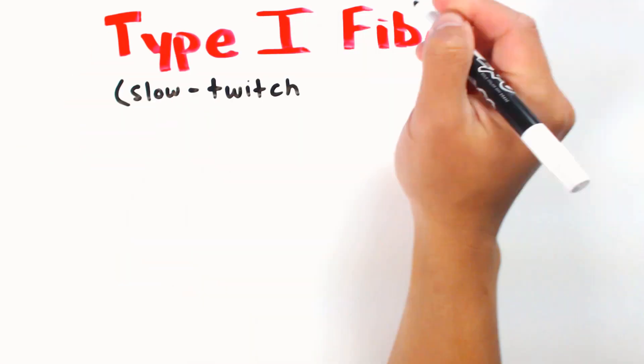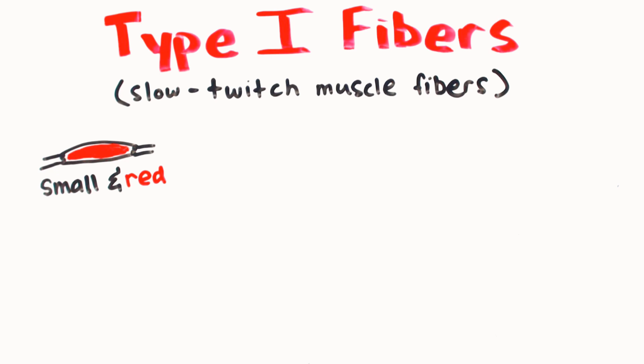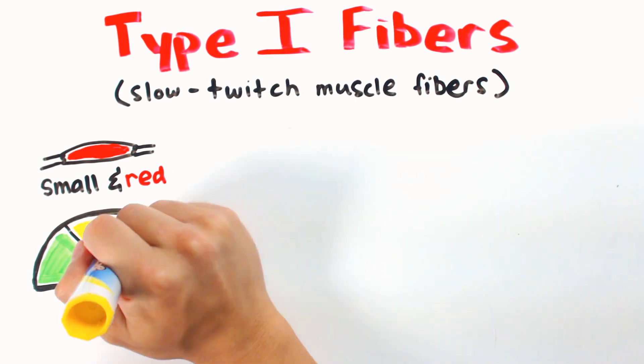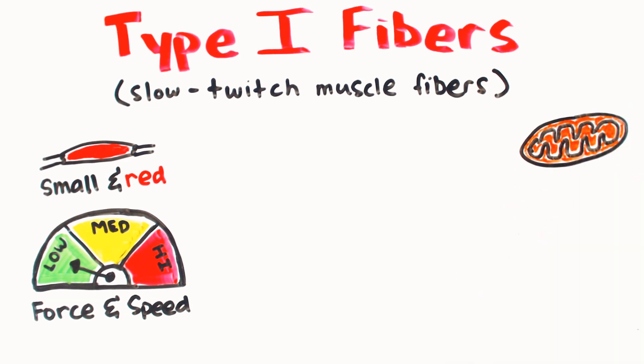Type 1 fibers, also known as slow twitch fibers, are the smallest fiber types with a darkish red color. It has a fairly slow twitch speed and produces a relatively small amount of force when contracted. It has high amounts of mitochondria, which are organelles within each cell that uses oxygen to produce energy.